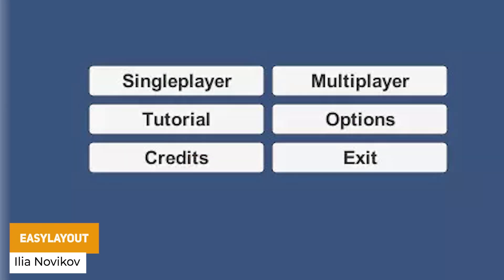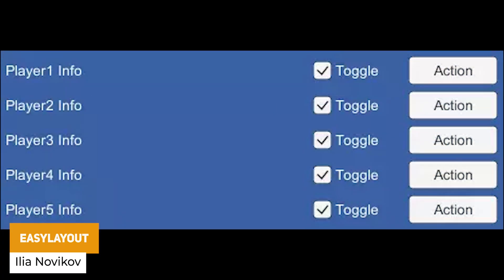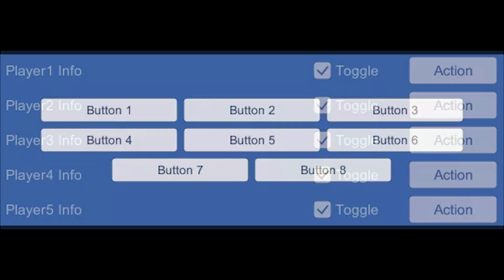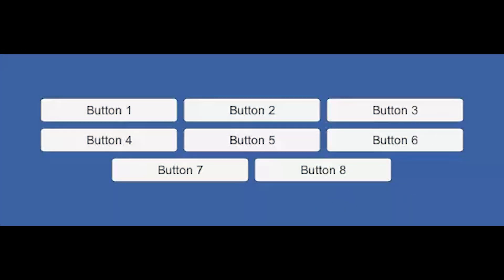The next one is something called Easy Layout, and it looks like a quite useful one. It allows you to group UI elements in different ways — whether you want to stack them, have two rows or lines, set margins and spacing — and it works in 2D and 3D with full source code and can be used across the board.